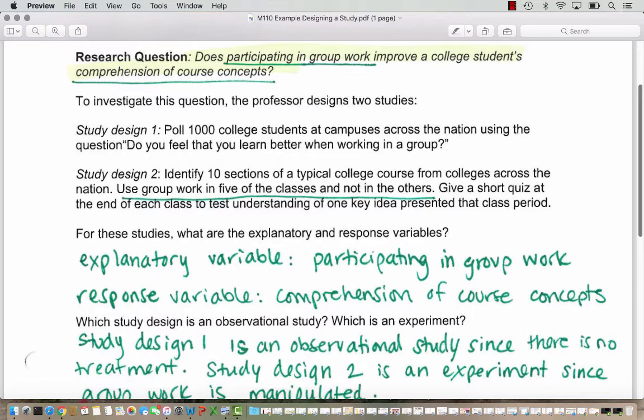For both studies, the explanatory variable is participating in group work, because that's what we think explains the change. The change that we're identifying is if the comprehension of course concepts improves, so the response that the research study is going to try to measure is the comprehension of course concepts.